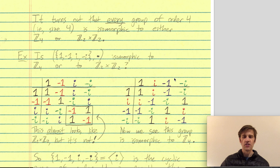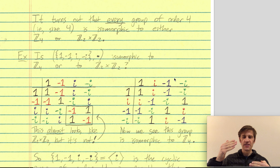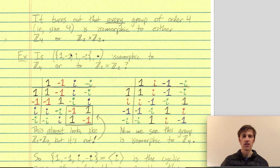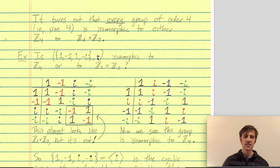It turns out that every group with four elements is isomorphic to either Z4 or Z2 cross Z2. Let's take a new group of size 4 and figure out which class it belongs to. Consider the group whose elements are 1, -1, i, and -i, where i is the square root of -1, so i squared equals -1, and the operation is multiplication of complex numbers. So which group is it isomorphic to — Z4 or Z2 cross Z2? Let's draw out the multiplication table.